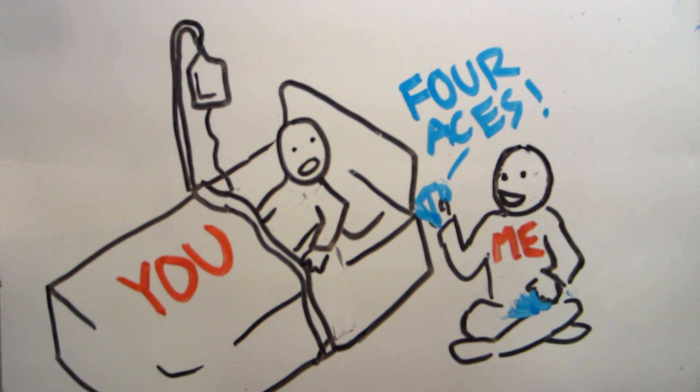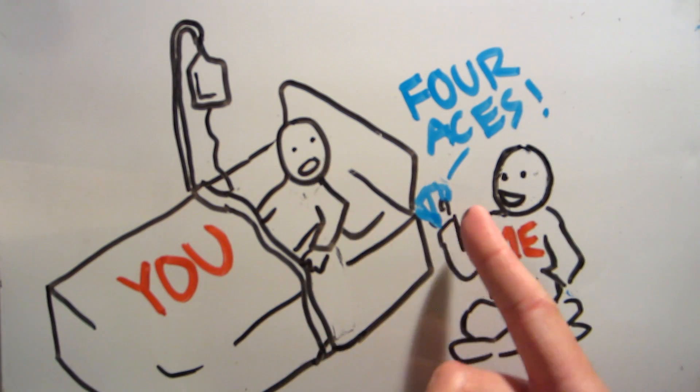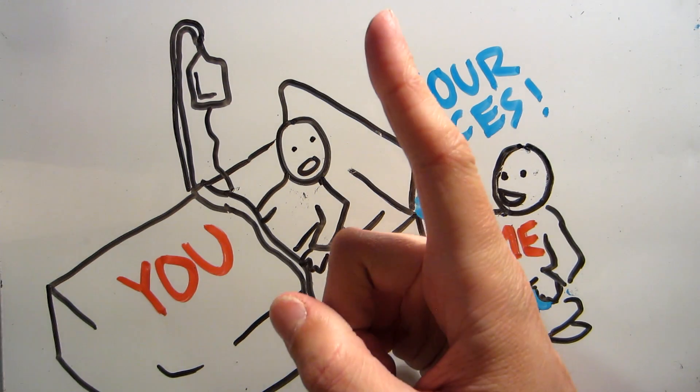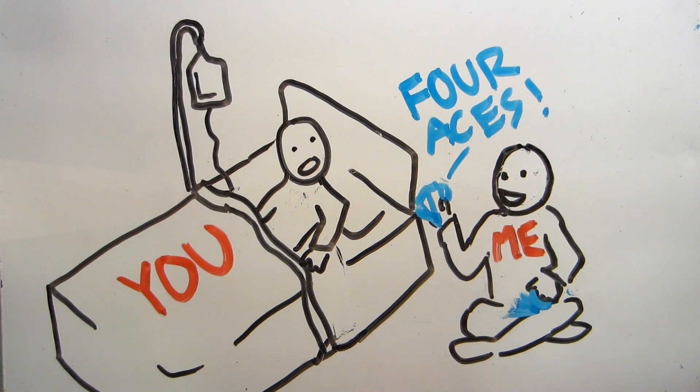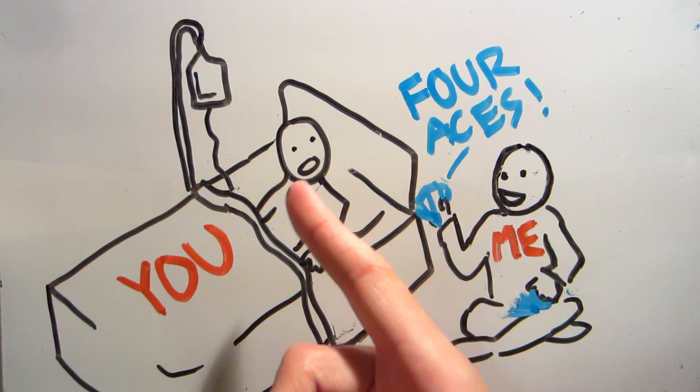No matter what the probability of drawing the four aces is, the probability of you seeing them when you wake up is one. This is because your observation is tied to the outcome. You can only see what cards I've drawn when I draw the four aces and wake you up.